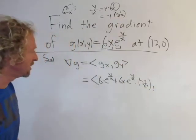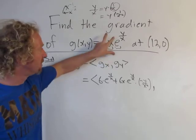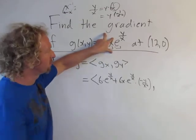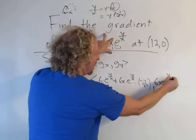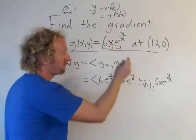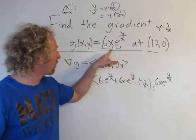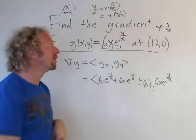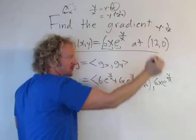The next partial should be easier — taking the partial with respect to y. Six x is a constant now so we don't need the product rule. Using the chain rule: e to the y/x hangs out, and the derivative of the inside — y times one over x — with respect to y gives just one over x, since one over x is constant.